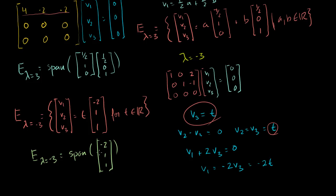Interestingly, if you dot the vector (minus 2, 1, 1) with either of the two basis vectors of the eigenspace for lambda equal to 3 — taking minus 2 times one-half gives minus 1, and plus 1 gives 0 — the dot product is 0. So this line is orthogonal to that plane. Very interesting.